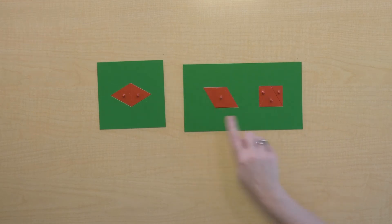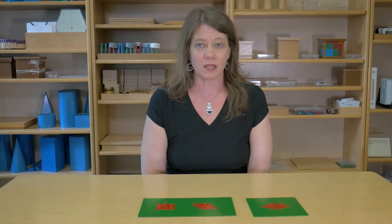So we could say that this rectangle is equivalent to this rhombus and this rhombus is equivalent to this rhombus. Would you like a turn?